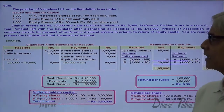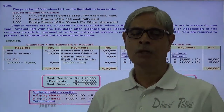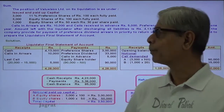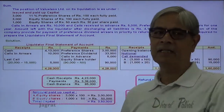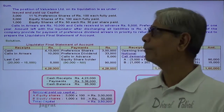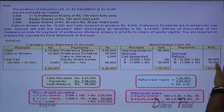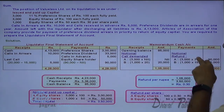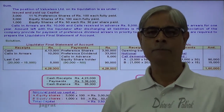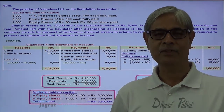Now, the liquidator's final statement should agree on both sides — 4,28,000 is the total on both sides. This is how the liquidator's statement is prepared. I have tried to explain with this sum by demonstrating the amount to be demanded and refunded on a percentage basis. At the same time, I have prepared the memoranda cash account, where notional calls are demanded and notional refunds are made, and the difference between the notional demand and notional refund is recorded in the actual liquidator's statement. This is how the sum is solved. I feel that you have followed all these things. Thanks to all of you.